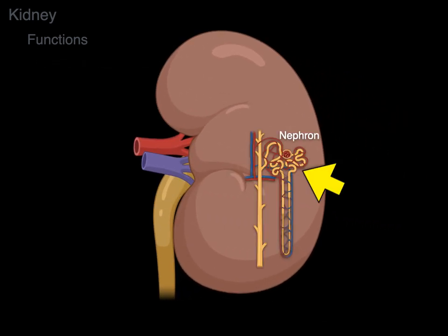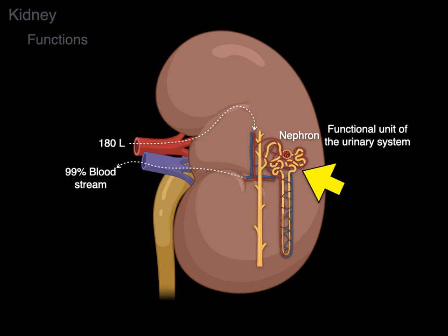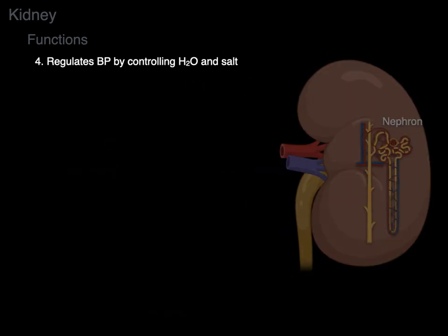The nephron is the functional unit of the urinary system — that's where all the rubber hits the road. The kidneys filter 180 liters of blood a day through these nephrons. Of that 180 liters, 99% is reabsorbed back into the bloodstream, and 1% is excreted as urine. By sampling that much blood and only excreting a small amount, the kidneys regulate blood pressure by controlling water and salt.